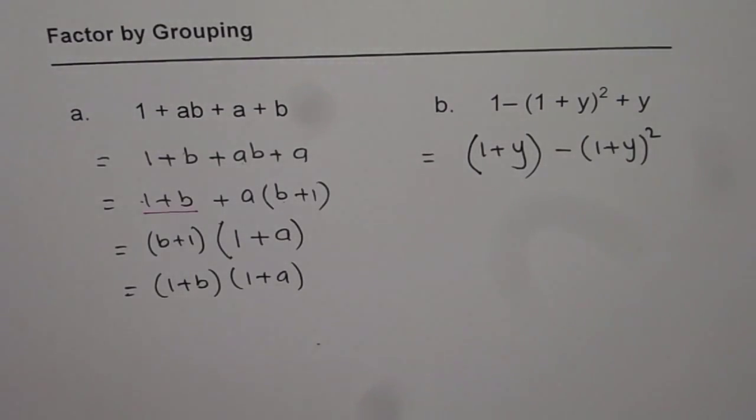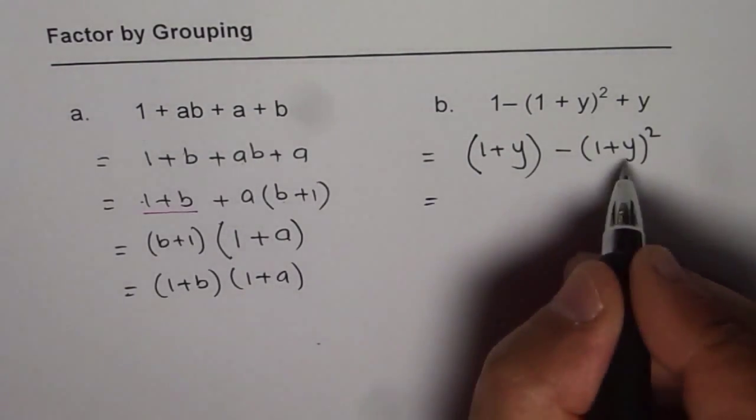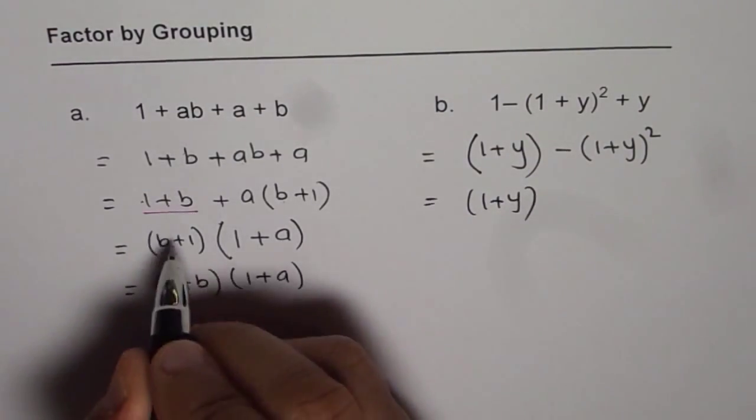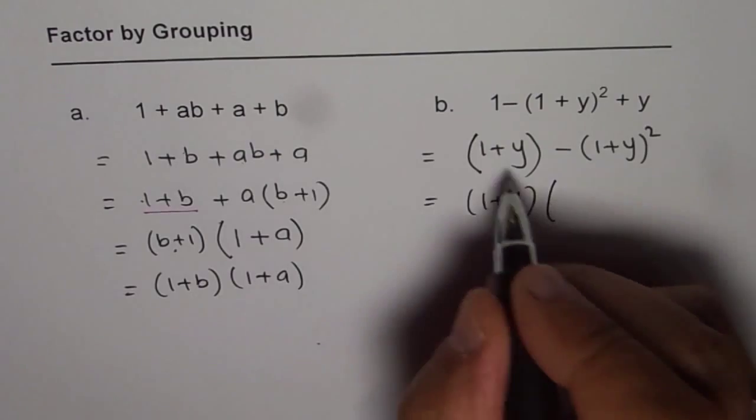Now I think it becomes more clear, right? Now 1 + y, as you can see, is common. So we will take 1 + y as a common, just as we took here, right? We are left with 1 + y.